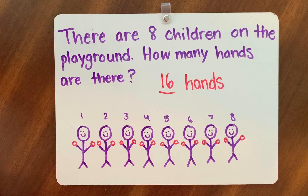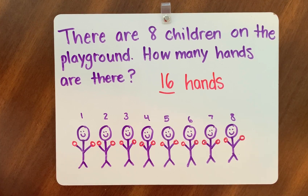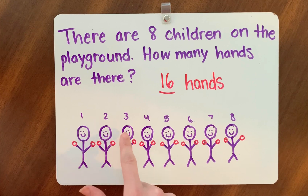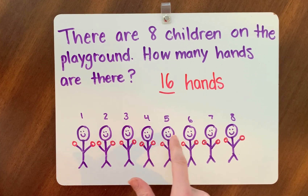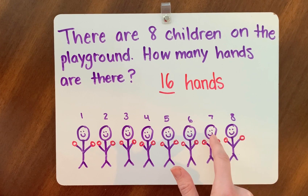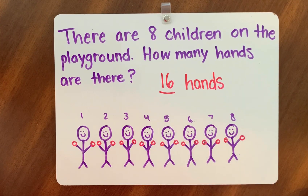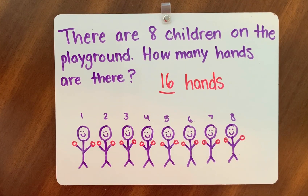Let's skip count together to see if we get the same answer. Two, four, six, eight, 10, 12, 14, 16. Much faster! 16 hands and eight children at the playground.